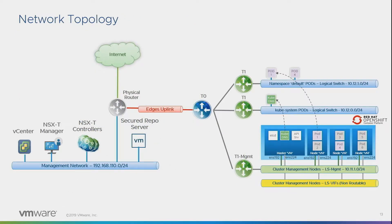Let me orientate you on the diagram. You can see that this is the management nodes — that's where you run vCenter as well as NSX. On the right-hand side, this is where we talk about the NSX-T construct. What you have here is a T0 and T1 — in layman's terms, these are basically virtual routers. Then what you have here are the switches — a logical switch where you connect all the pods into.